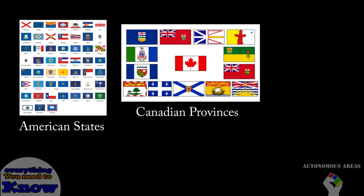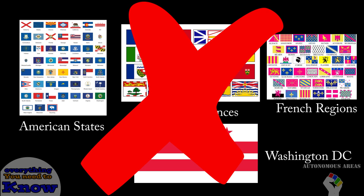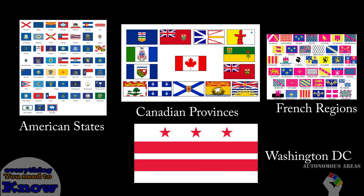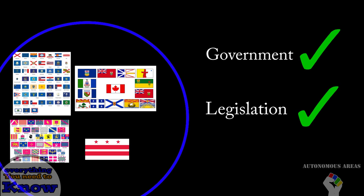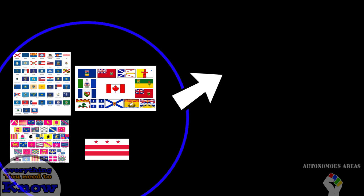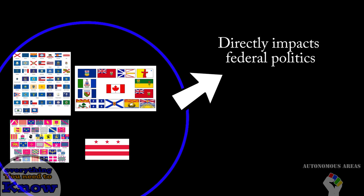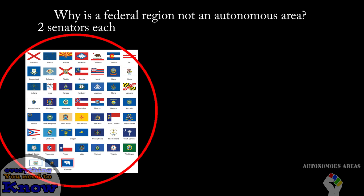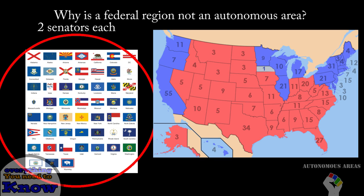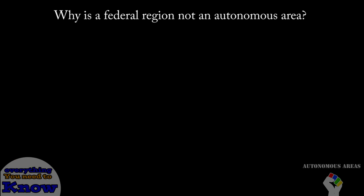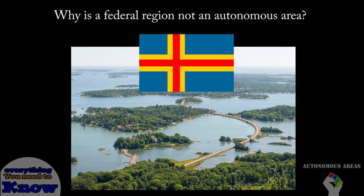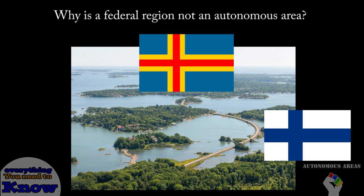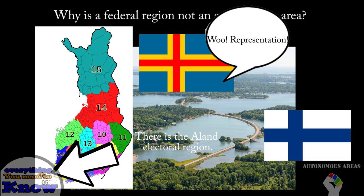Most federal states, provinces, regions, or districts are not considered autonomous areas, even though they have their own governments and legislations. This is because these regions have a direct impact on federal politics. An example of this is the American states — each state has two senators and is worth a certain amount of points in a presidential election. Autonomous regions, however, usually don't affect federal politics at this set level. An example that goes against this is the Åland Islands in Finland, which count as one parliamentary seat even though they are an autonomous region.